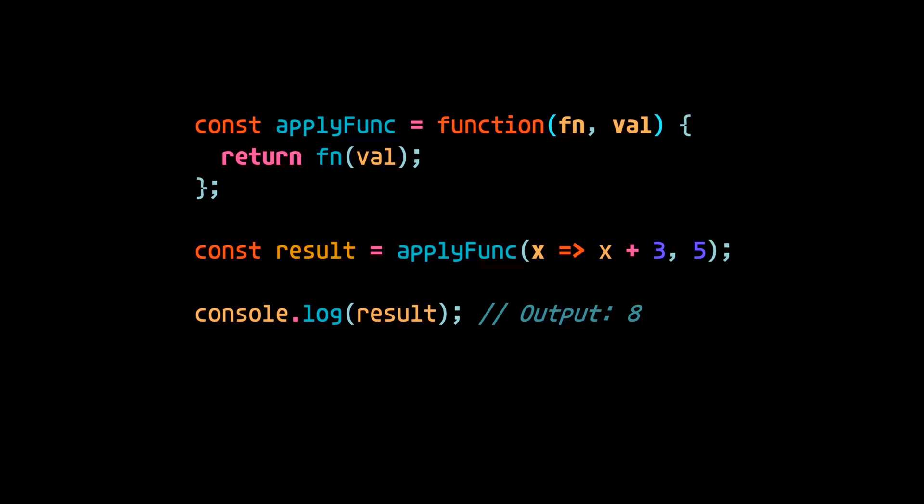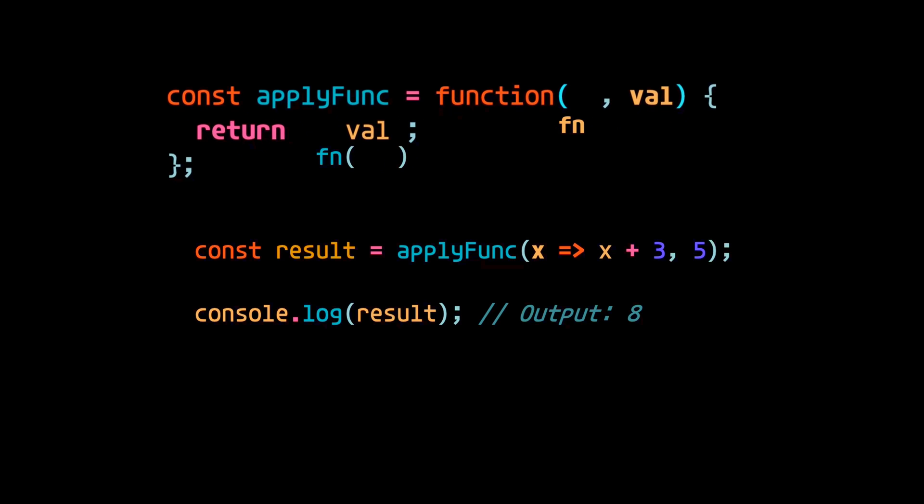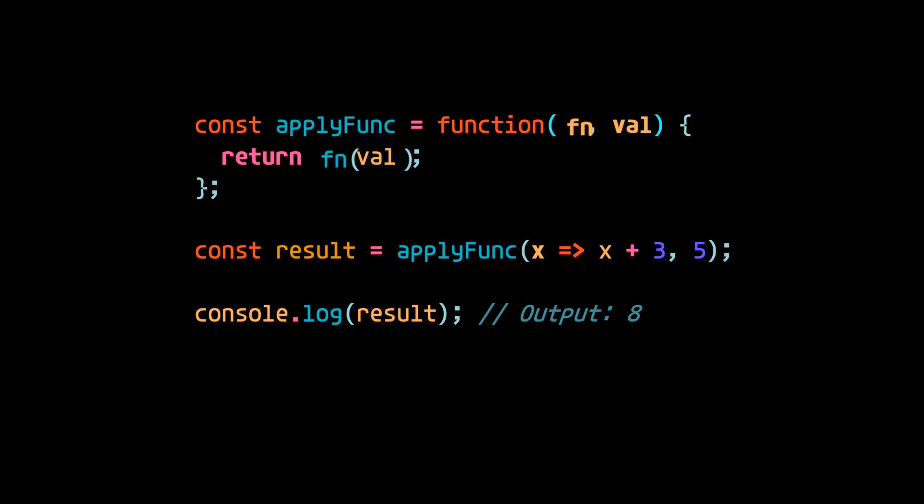Now, sticking with the previous example, a function that operates on other functions, like this top-level function is doing to the passed in function, is called a higher-order function. And that's pretty much all there is to say about higher-order functions. But there is more to be said about functions.